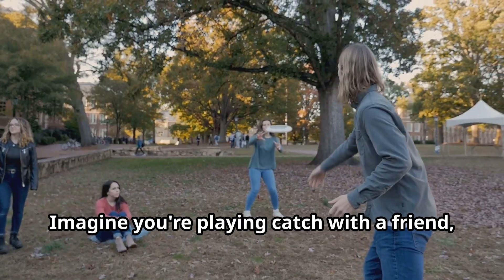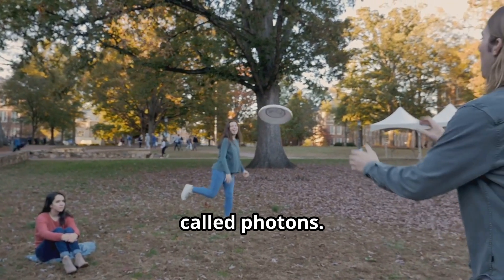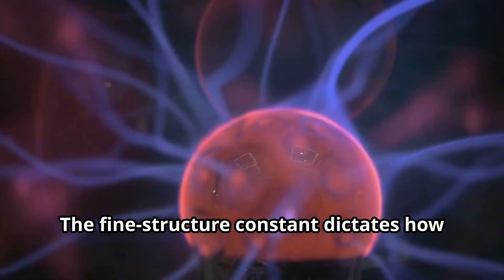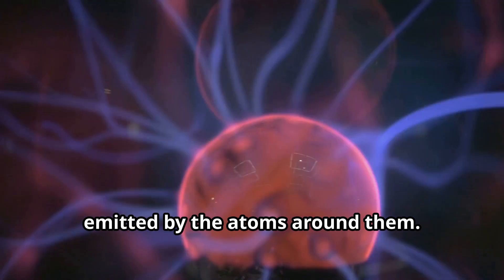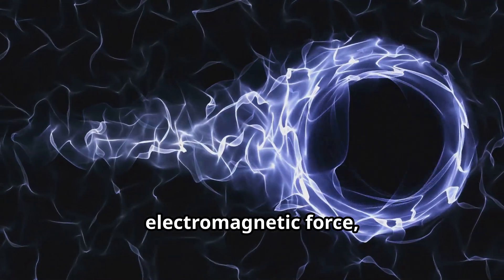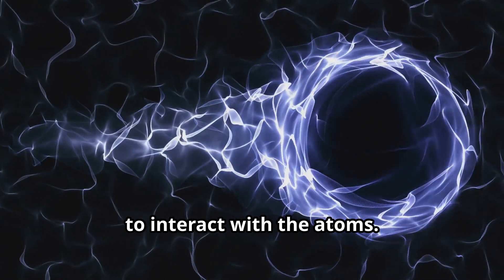Let's break down this fine structure constant a bit further. Imagine you're playing catch with a friend, but instead of a ball, you're tossing tiny particles of light called photons. The fine structure constant dictates how likely these photons are to be absorbed or emitted by the atoms around them. A higher value means a stronger electromagnetic force, which means those photons are more likely to interact with the atoms.